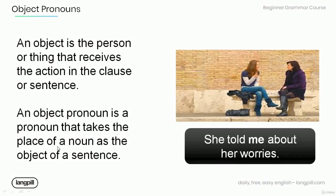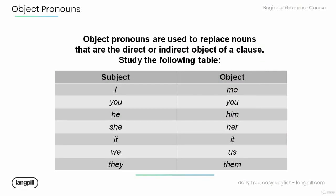An object pronoun is a pronoun that takes the place of a noun as the object of a sentence. For example, in this sentence: 'She told me about her worries,' the word 'me' is an object pronoun because it refers to the person that is receiving the action.